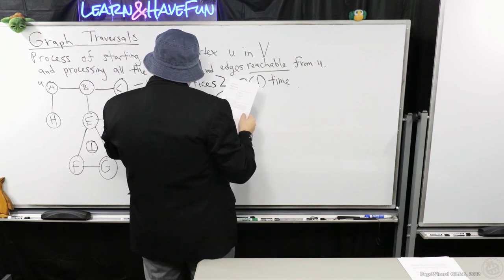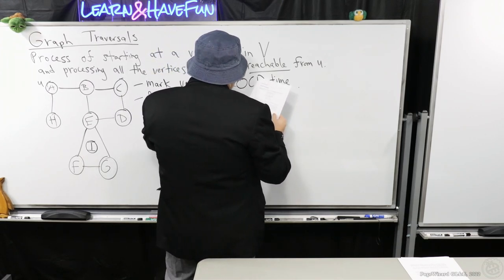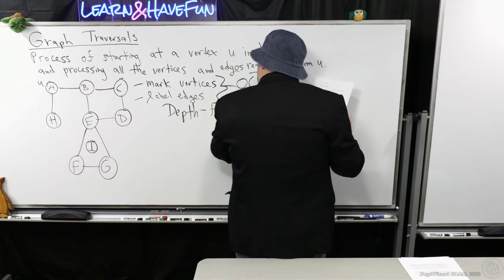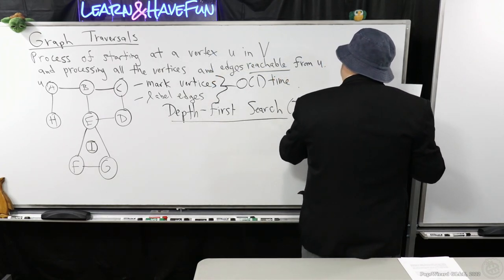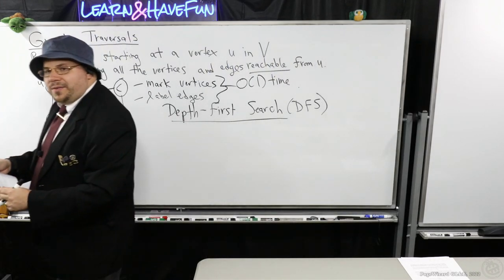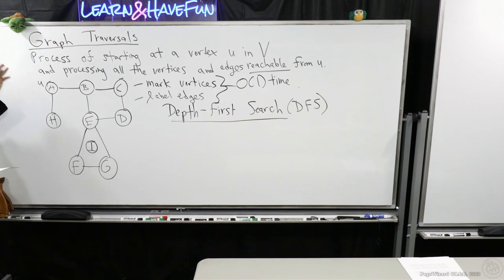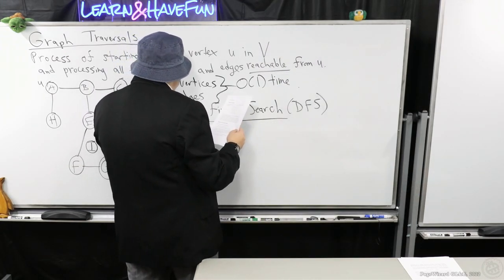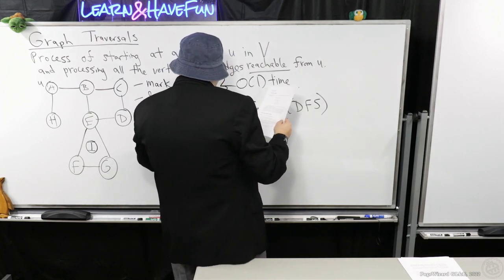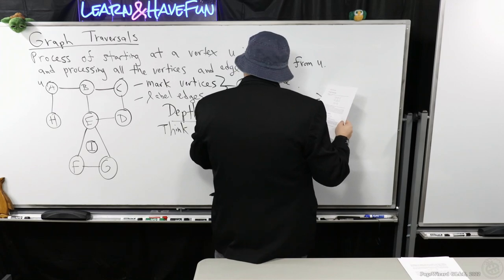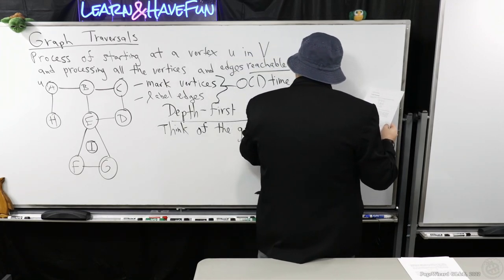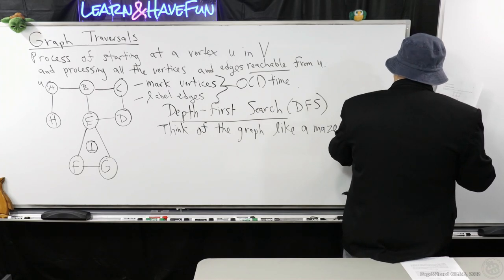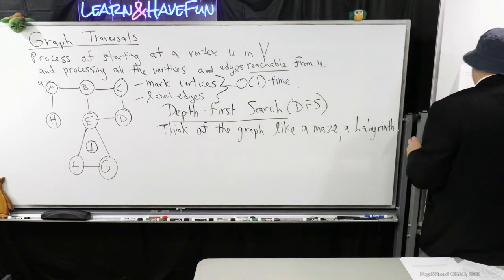The first way we're going to look at how we can explore a graph or network is what we call depth-first search, which I'll abbreviate as DFS. A very natural question is how can we process all the vertices and edges reachable from U. I like to think of the graph almost like a maze — a labyrinth.